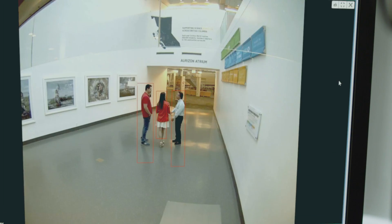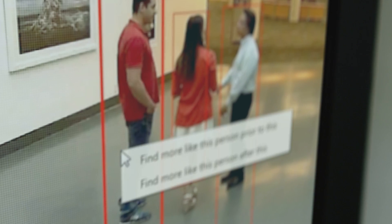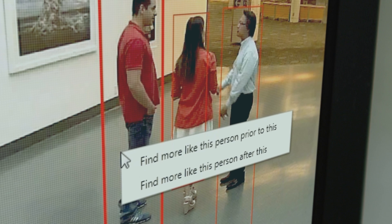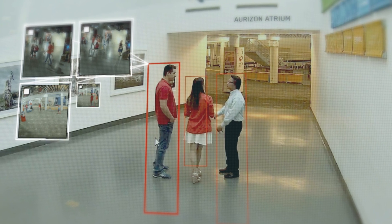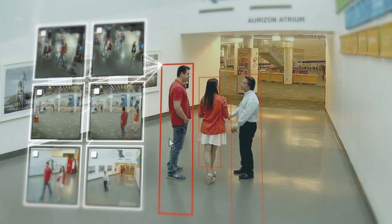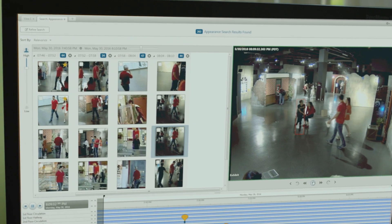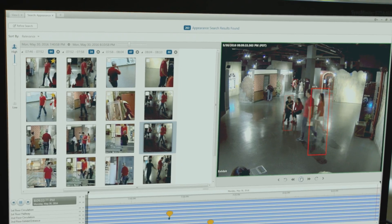What excites me is that we're now introducing a true search engine for video. Appearance Search is the first and the foundational step to enable true video content-based search. It makes the act of finding the information that you need incredibly quick, and that really changes the nature of what video surveillance is going to be used for.